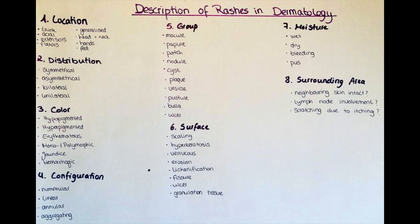In the fourth step we describe the configuration of the rash. Here we pay attention to the shape of the lesion or lesions if there are several. The lesion can be nummular — shaped like a coin — linear if it is running in a line along an area, or annular if it shapes a circle. Also you can describe whether multiple lesions are next to each other in one field but not touching, or if they are aggregating to a large field.